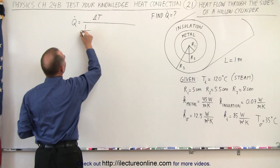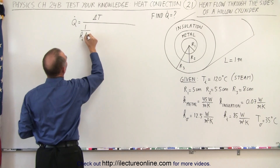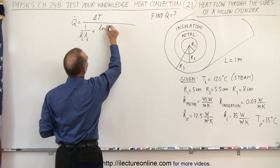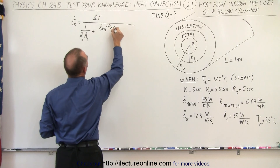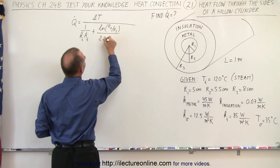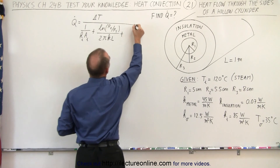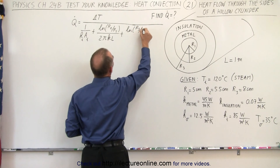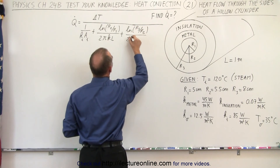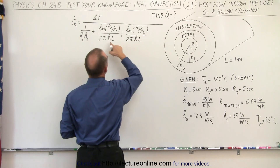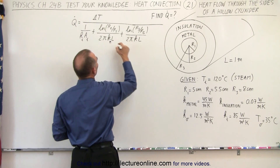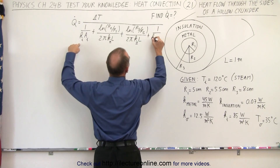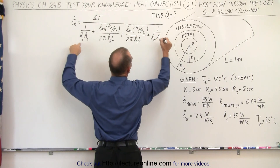We have 1 over H on the inside times the area on the inside, plus the natural log of the ratio R2 to R1 divided by 2πKL for the metal, plus the natural log of the ratio R3 to R2 divided by 2πKL for the insulation, and then plus one more term: 1 over H on the outside times the area on the outside.